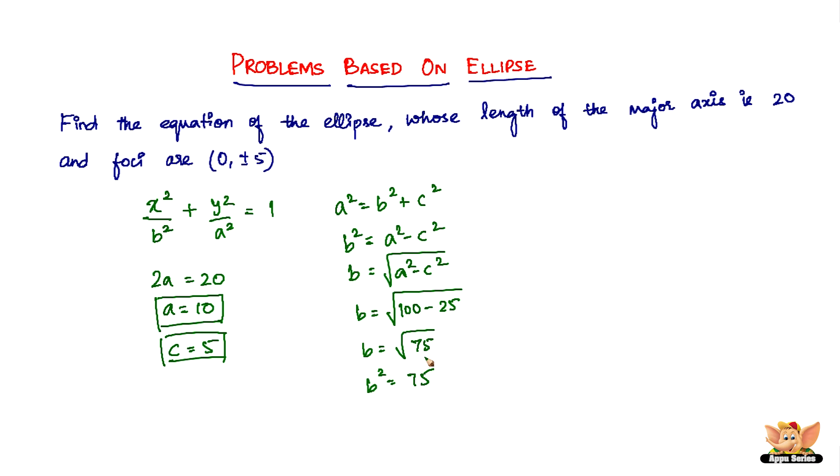So now all we have to do is just substitute the values of a and b in this equation to get the equation of the ellipse. Here we are: x squared divided by b squared which is 75 plus y squared divided by a squared which is 100, 10 squared is 100, equal to 1.